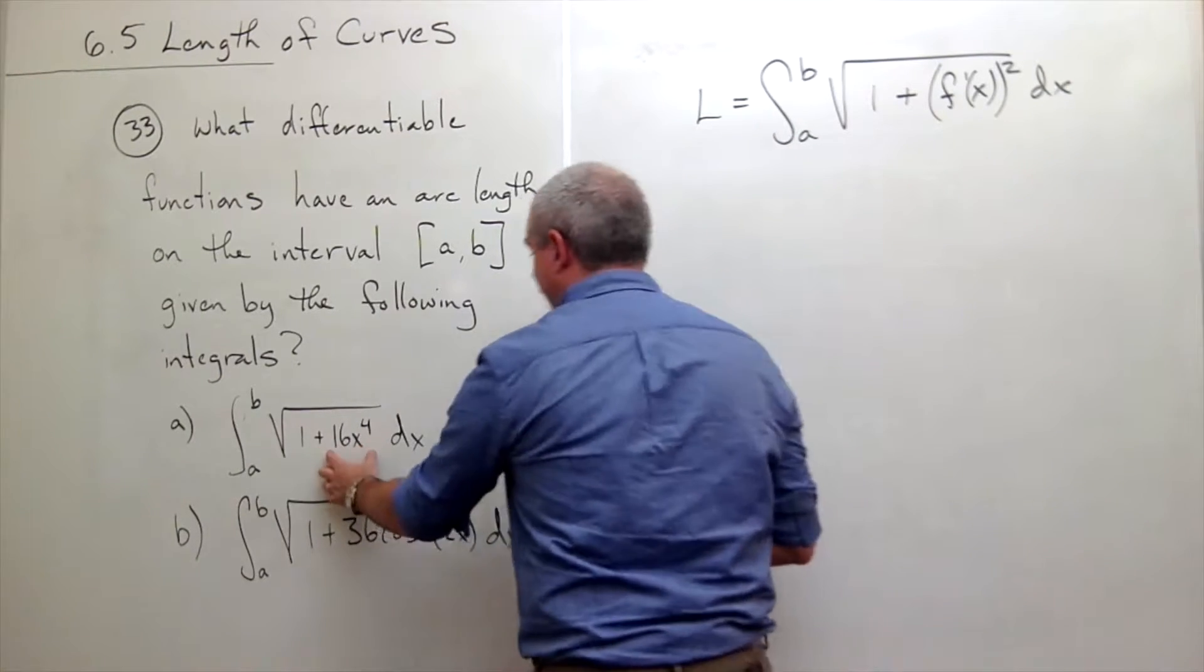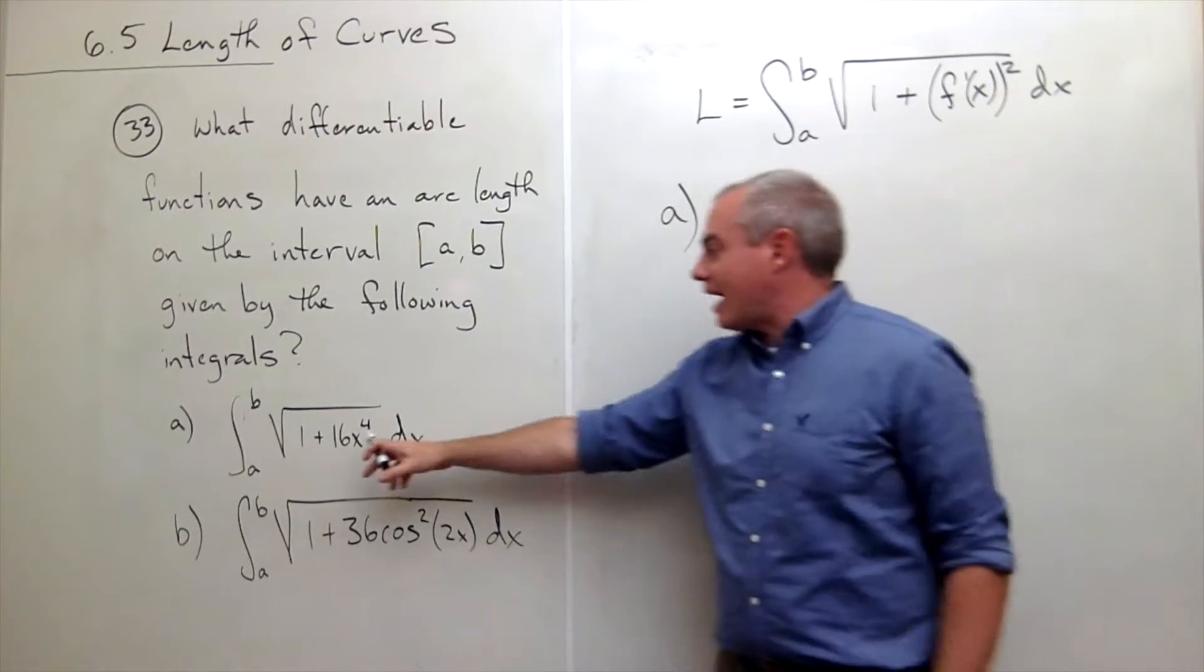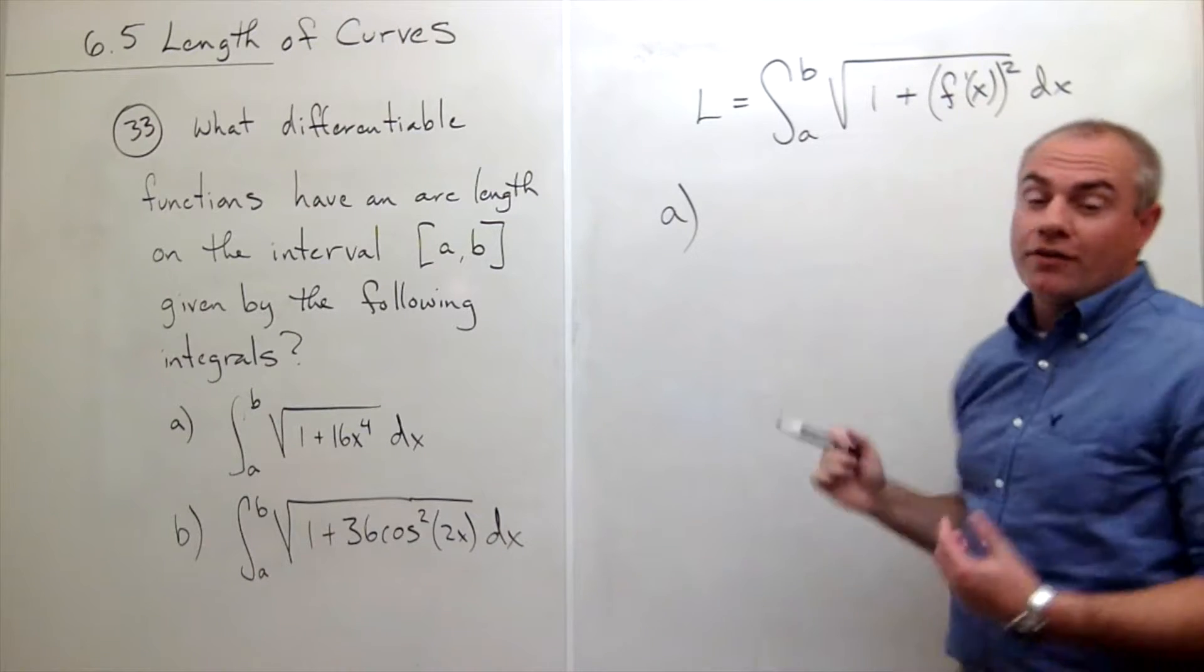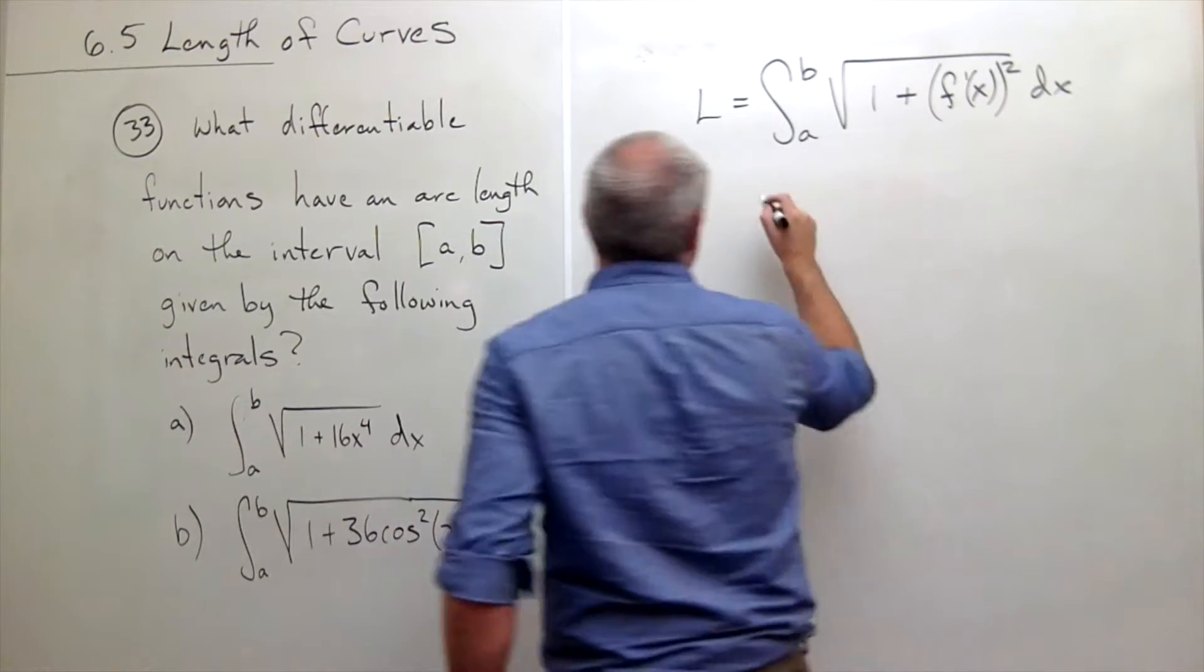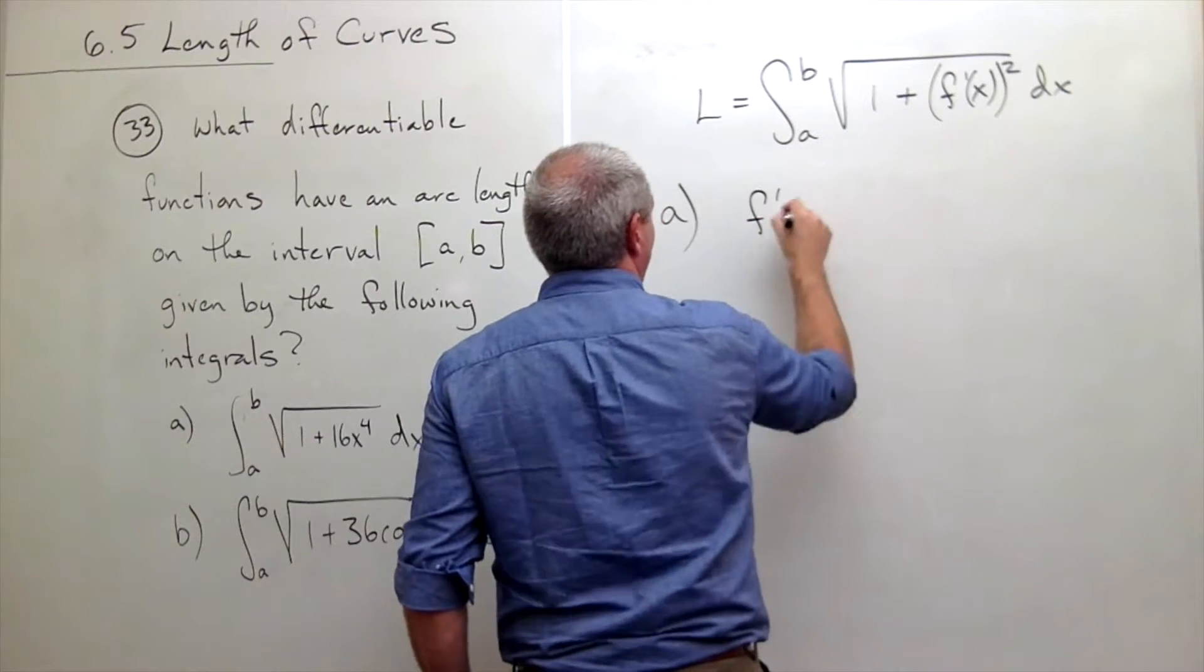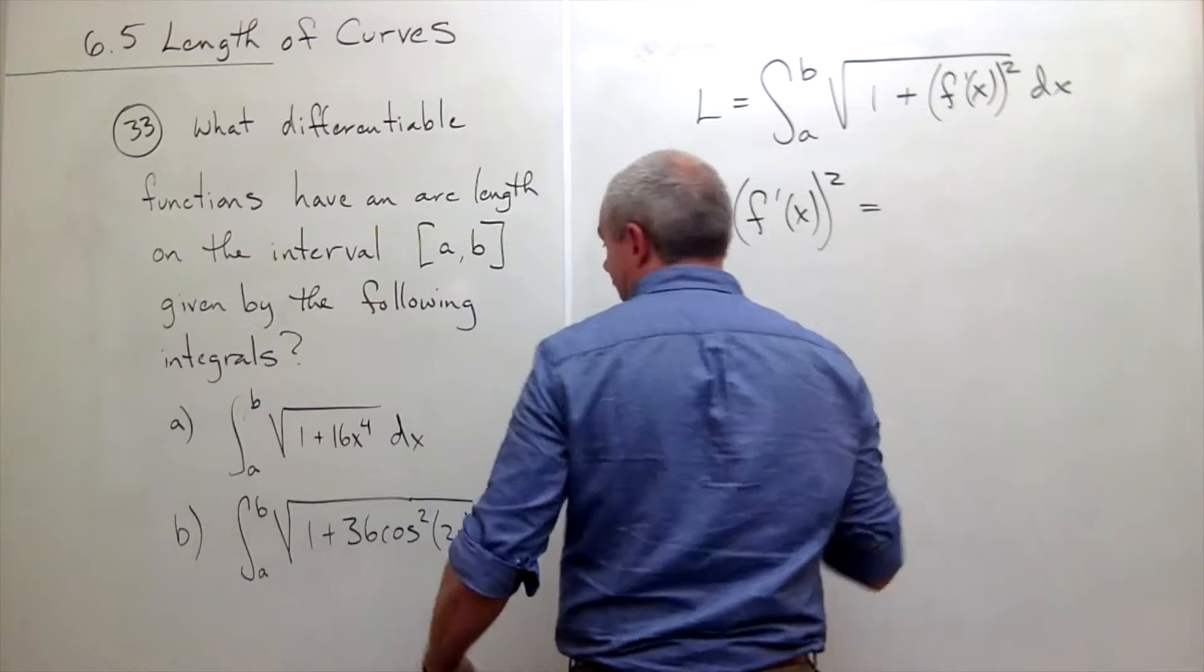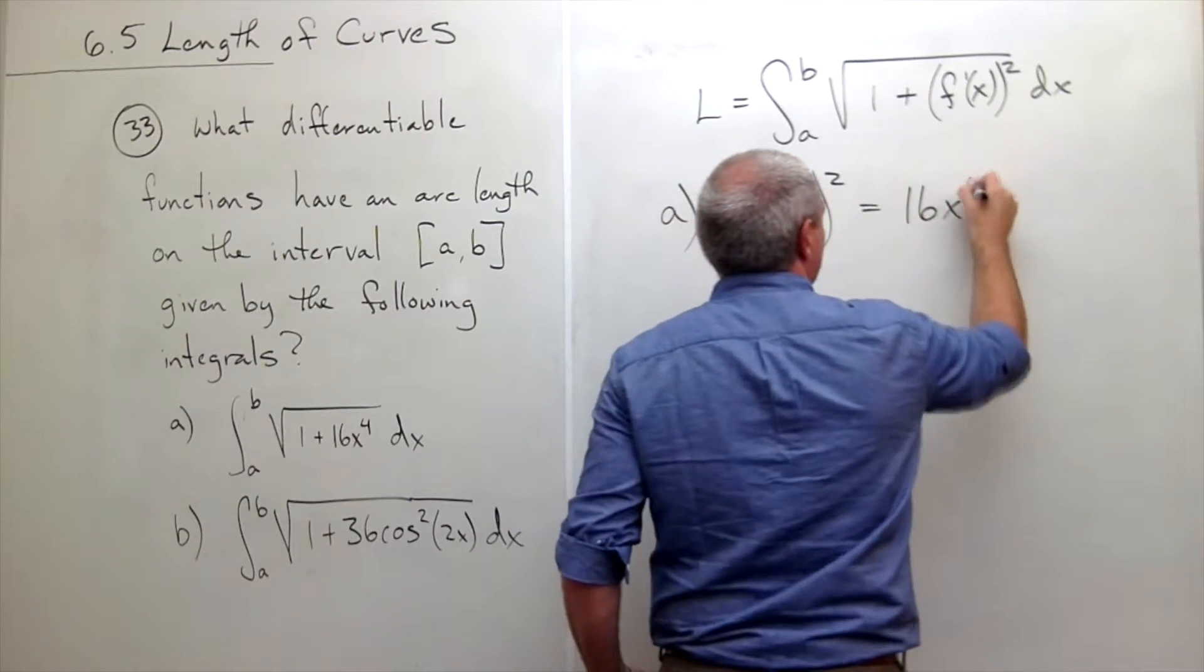So this guy, 16x to the 4th, let's look at part a. 16x to the 4th must be the derivative of my function squared, right? So the derivative of my function squared, we know, is 16x to the 4th.